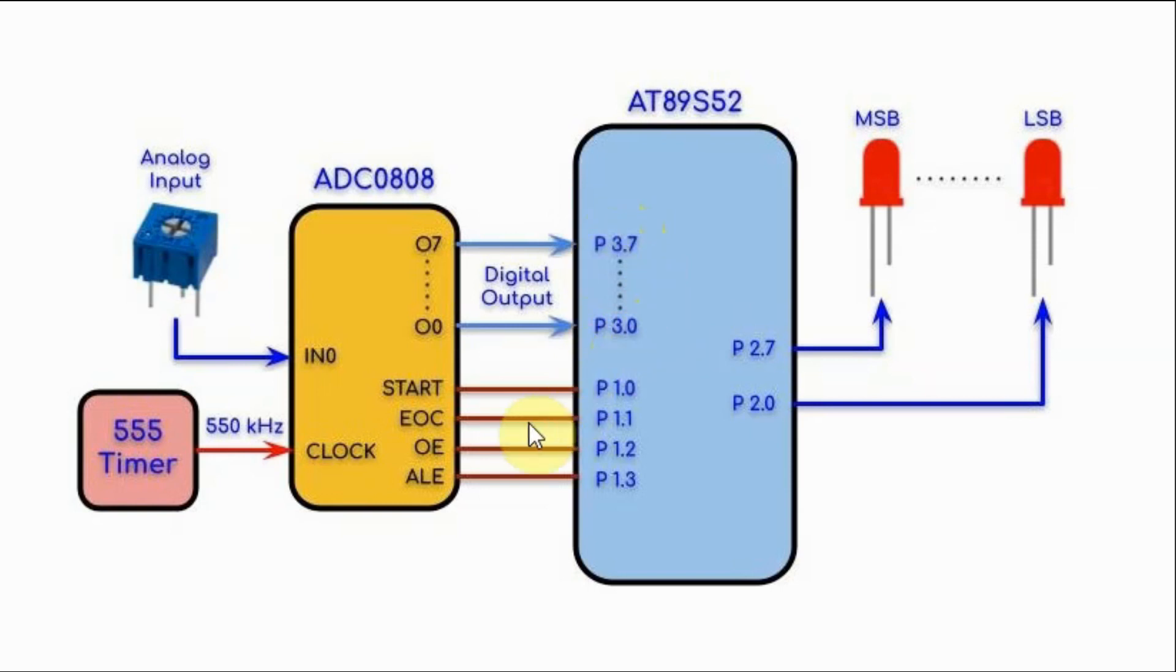We have the control line start of conversion, end of conversion, output enable and the address line enable. They have been interfaced with pins of port 1. And we have the digital output displayed on 8 LEDs from the least significant bit to the most significant bit via port 2 of the controller.